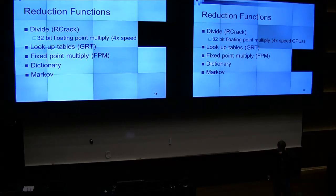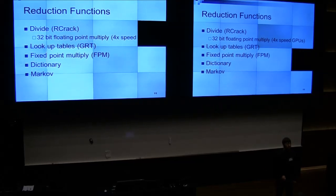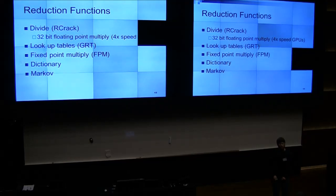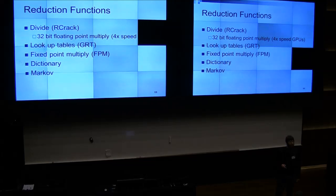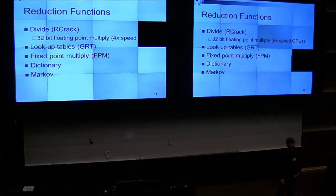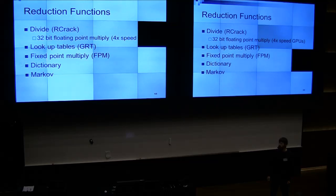Reduction functions — there are a bunch of different methods. There's divide, which you'd probably know from Rainbow Crack. The original creator of Rainbow Tables also used divide, but doing 32-bit divide in specific cases. Rainbow Crack basically just uses 64 bits, which is a very general reduction function. I rewrote the reduction function to use 32-bit floating point multiply instead of 64-bit divide, and you get a 4x increase on GPUs. I'm pretty sure this was also done by the person that wrote Rainbow Crack, but they went closed source, so I actually don't know.